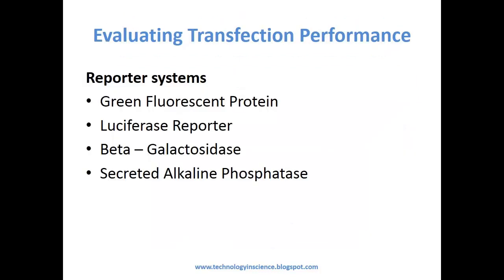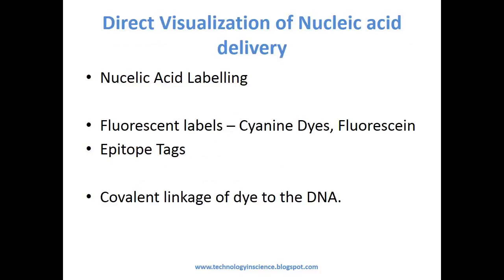Evaluating transfection performance using reporter systems. Commonly used reporter systems include green fluorescent protein (GFP), luciferase reporter, beta-galactosidase, and secreted alkaline phosphatase. For direct visualization of nucleic acid delivery, nucleic acid labeling methods are used, such as fluorescent labels with cyan dyes, fluorescein, and epitope tags, as well as covalent linkage of dye to the DNA.